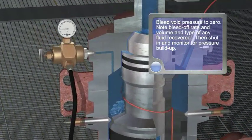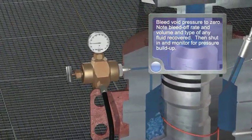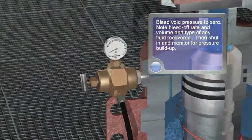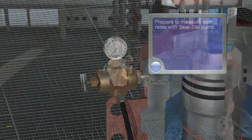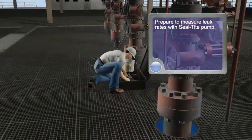Bleed void pressure to zero. Note bleed-off rate and volume and type of any fluid recovered. Then shut in and monitor for pressure build-up. Prepare to measure leak rates with seal-tight pump.